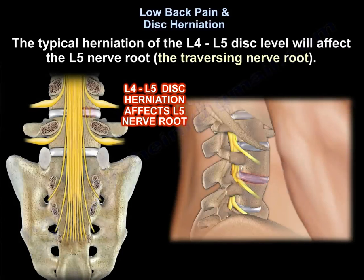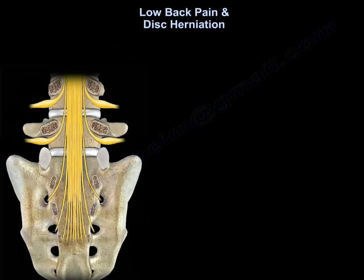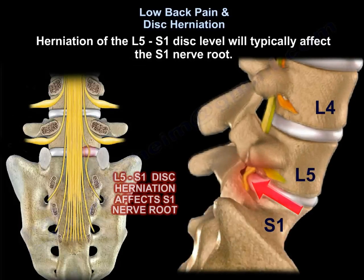A typical herniation of the L4-L5 disc will affect the L5 nerve root — we call that the traversing nerve root, as it traverses across that disc. Herniation of the L5-S1 disc will typically affect the S1 nerve root.